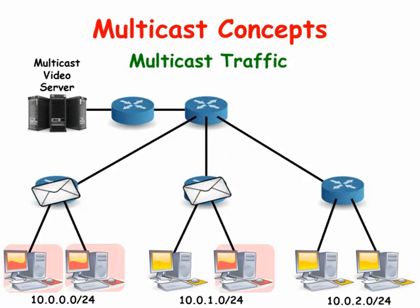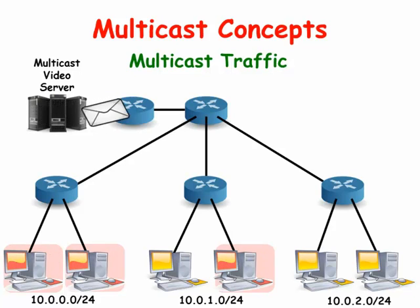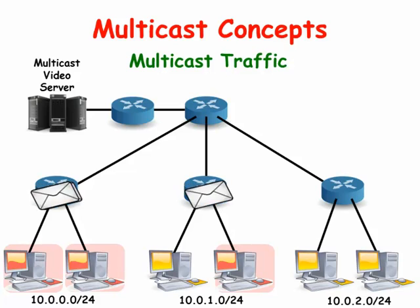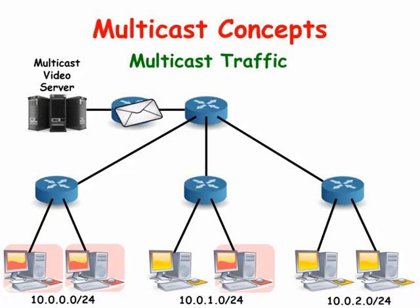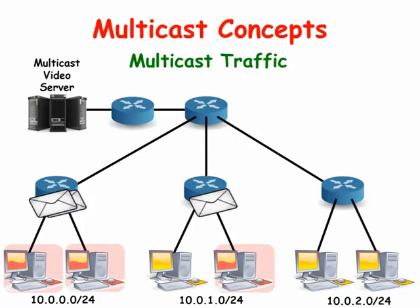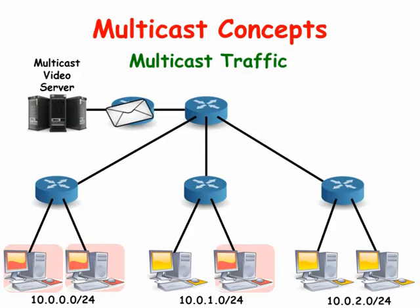In the illustration, the red computers want the video feed and the yellow computers do not. The routers only forward the packets out of the interfaces that have clients that want to see the video feed.